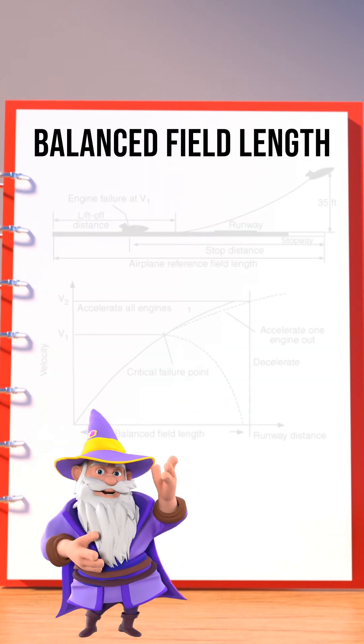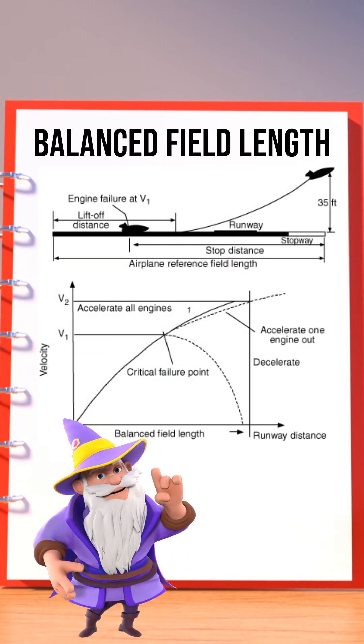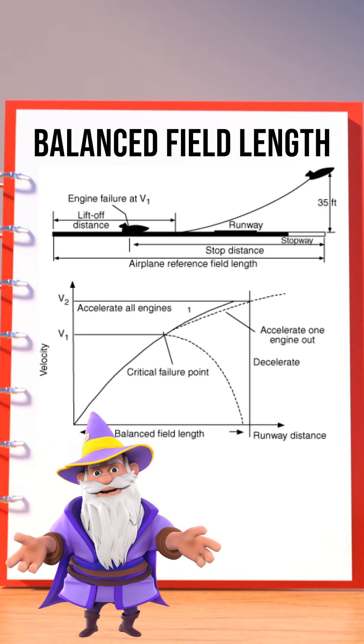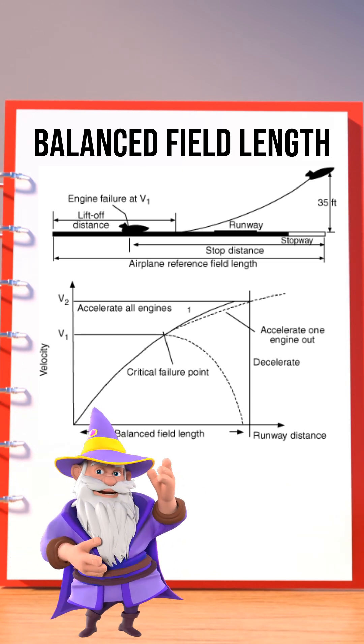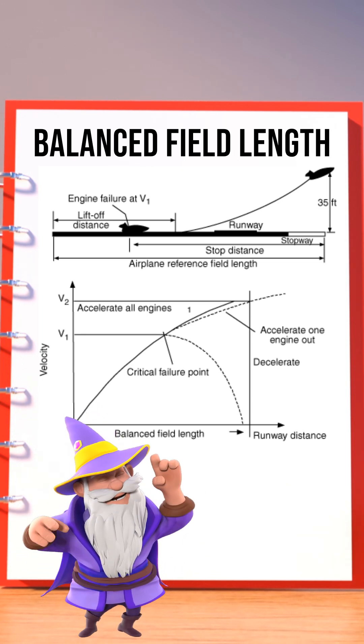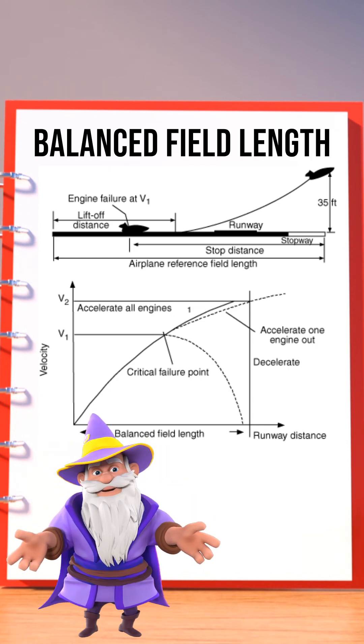Balanced field length is not just a declared distance like ASDA or TOTA. It's a result of performance calculations, often used to determine the minimum runway required for safe takeoff under given conditions.